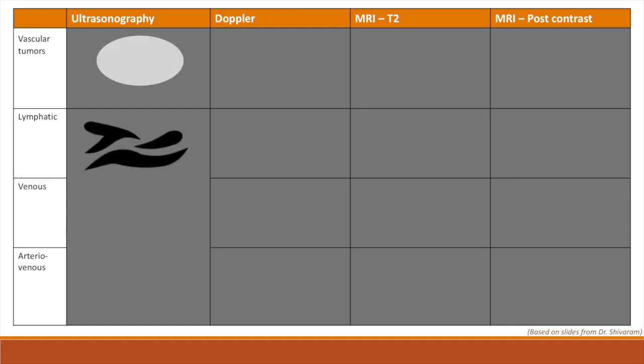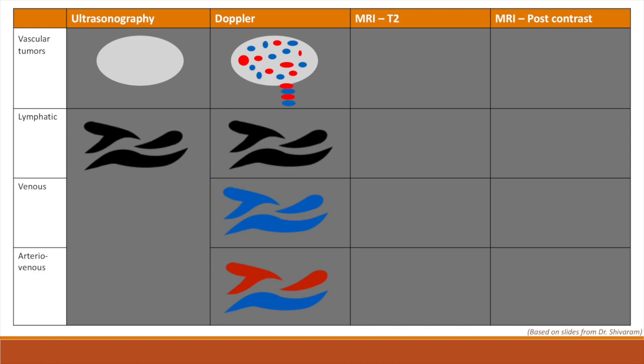Ultrasound will primarily differentiate between vascular tumors and vascular malformations. Vascular tumors will be a well-circumscribed mass, whereas vascular malformations will appear to be vascular channels. When we turn on color Doppler, we may be able to further differentiate between these. Vascular tumors will show flow within the anomaly on color Doppler, and in addition you may see a well-defined vascular stalk supplying the tumor. Color Doppler in vascular malformations will show different types of flow depending on the type. Lymphatic malformations will have no flow, venous malformations will have low flow, and arteriovenous malformations will have a component of arterial flow. Keep in mind the flow in venous malformations may be so slow that it may be missed.